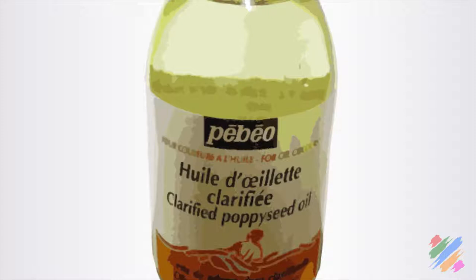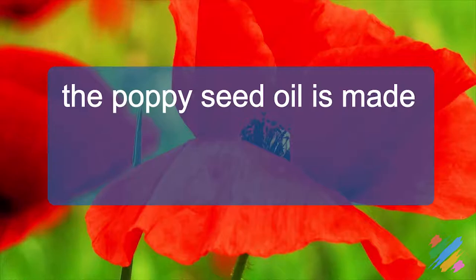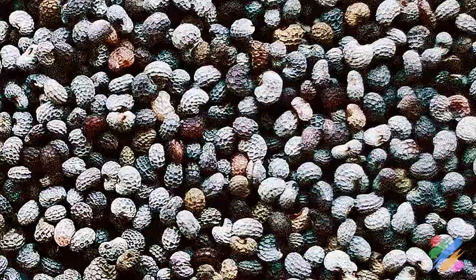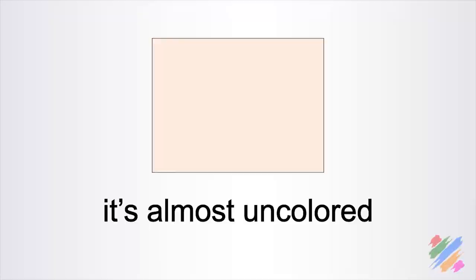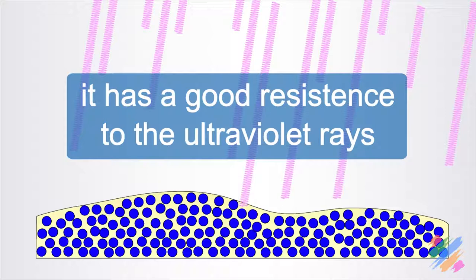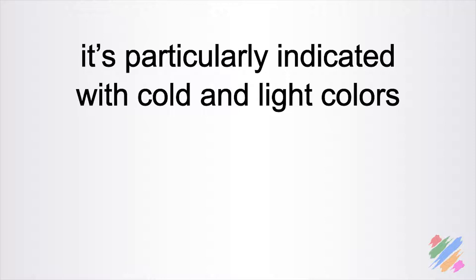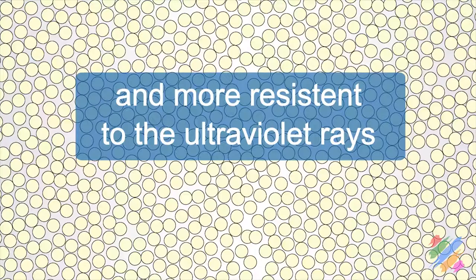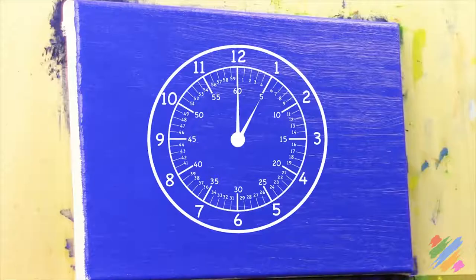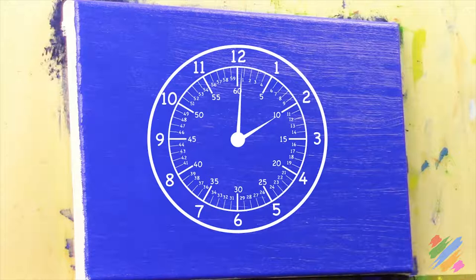Linseed oil has a quite long polymerization time, but it seems anyway shorter than the polymerization time of the poppy seed oil. The poppy seed oil is made by pressing poppy flower seeds. It's almost uncolored and it has a good resistance to the ultraviolet rays. It's particularly indicated with cold and light colors, but actually it works very well with all the other colors as well. As we already said, it has a quite long polymerization time. Also this medium can be processed to make it clearer and more resistant to the ultraviolet rays. And it can also be mixed with metal salts to speed its polymerization up.